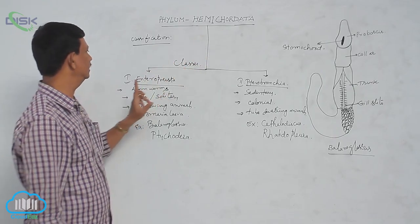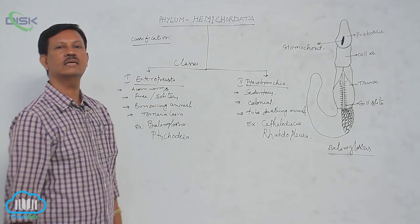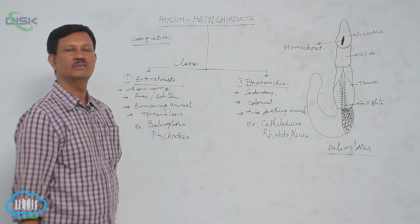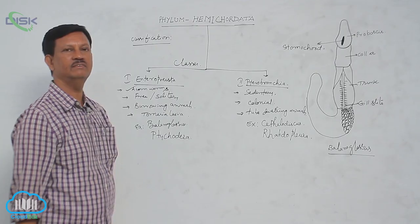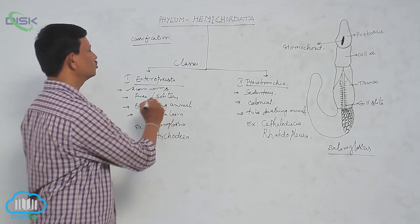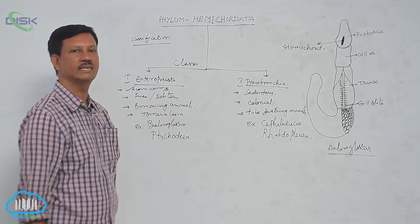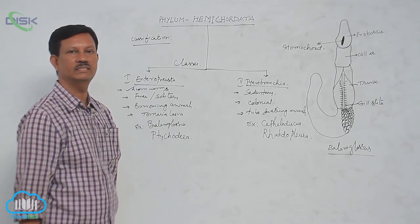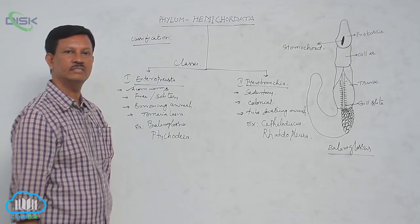First, we have to discuss Enteropneusta. These are commonly known as acorn worms. They are free-swimming or free-living animals, and some are solitary. They are burrowing animals found in marine water near the seashore.